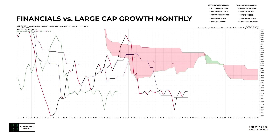On the monthly cloud, comparing XLF financials relative to SCHG large cap growth stocks: from a long-term perspective this trend has a lot of work to do. This is a massive counter-trend move within the context of a longer-term downtrend. Financials have been outperforming in recent months, but until proven otherwise, we treat this as a counter-trend move within a downtrend — meaning if you decide to sell growth and buy financials, you have to get two things right: when to buy XLF, and more importantly, when to sell it when the downtrend resumes.